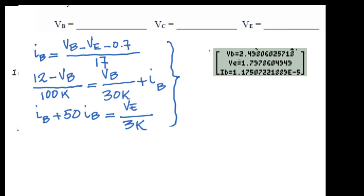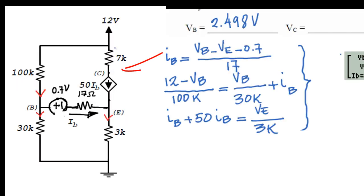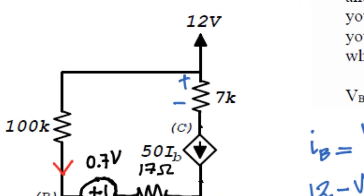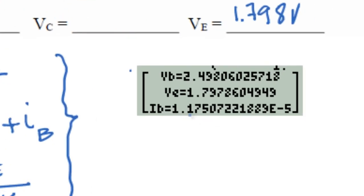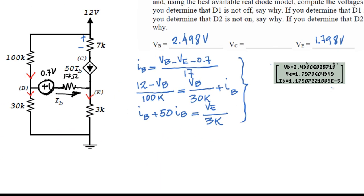From there, we copy directly VB. VE is 2.498. VE is 1.798. How about VC? The voltage here is 12 volts minus the drop produced by 50 times IB. IP is a current that we know: 1.2 times 10 to the negative 5, that is 11.8 microamps. So 11.8 microamps times 50 multiplied by 7.